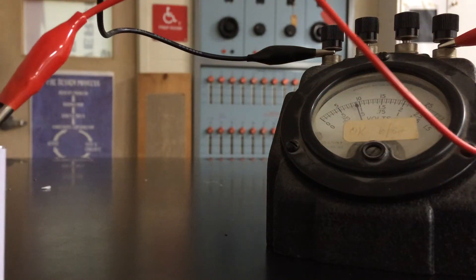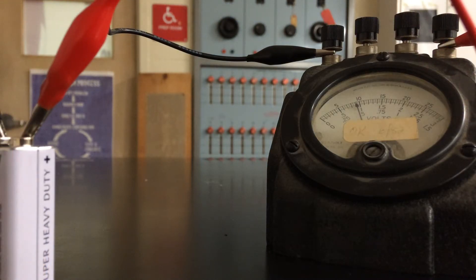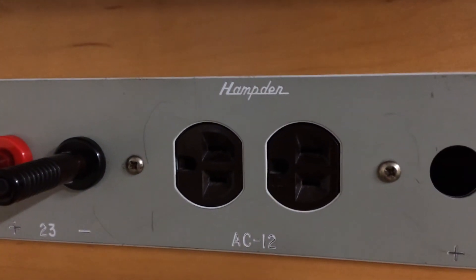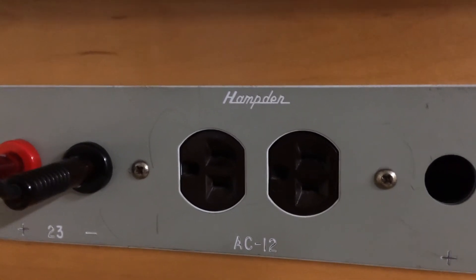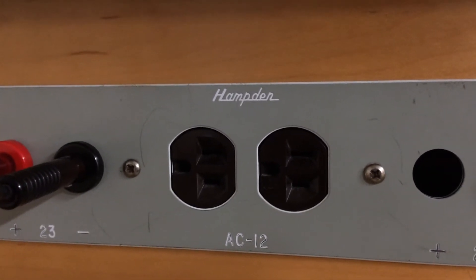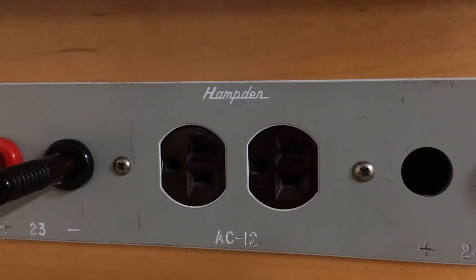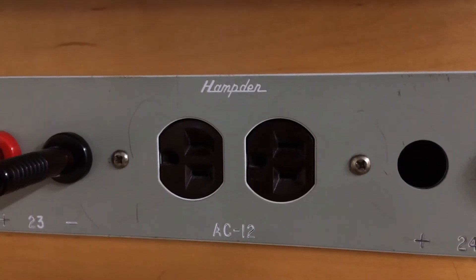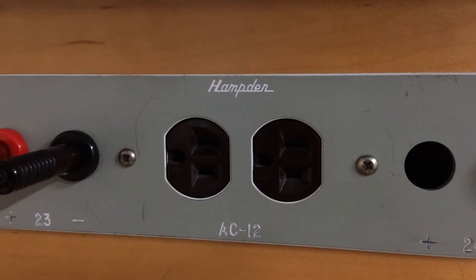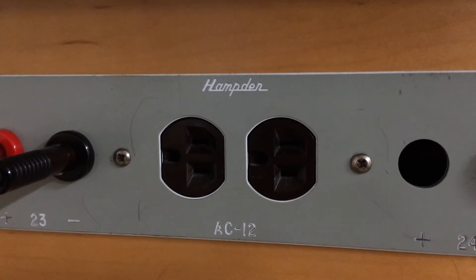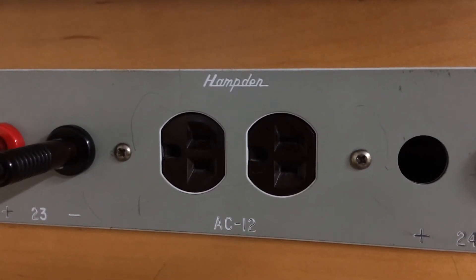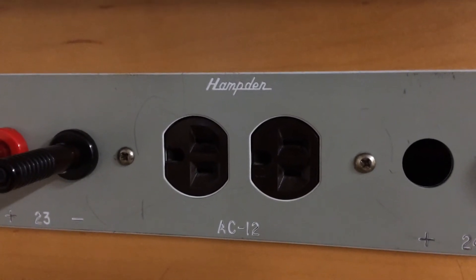The wall power supplies we're used to in the US actually don't have their own positive and negative. There's a special thing that happens with this kind of electricity: the current first flows one way, then back the other, and then back again. Positive and negative keep switching. This is called alternating current.